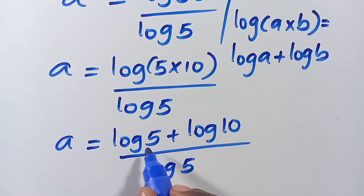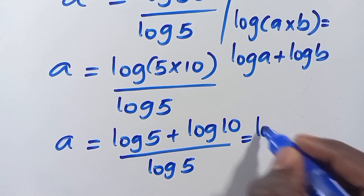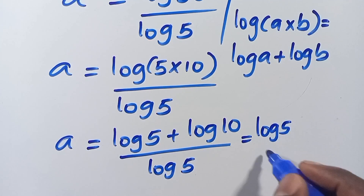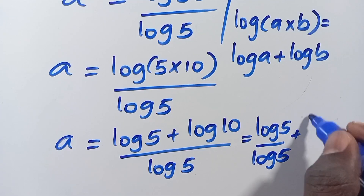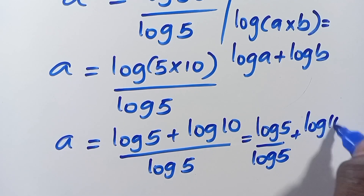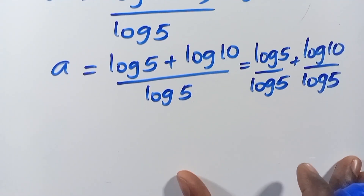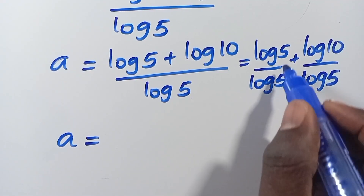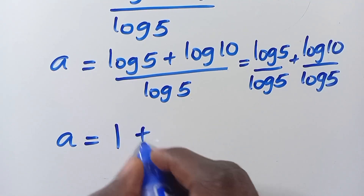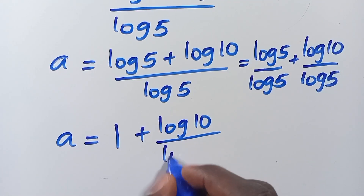So when we divide this out, we split the fraction: log 5 divided by log 5 plus log 10 divided by log 5. So log 5 divided by log 5 gives us 1, plus log 10 divided by log 5.